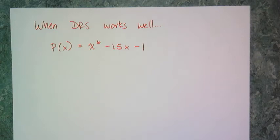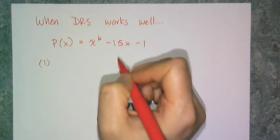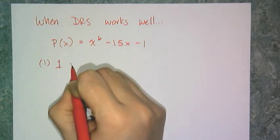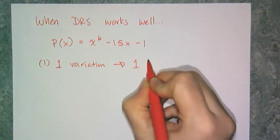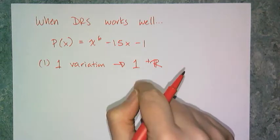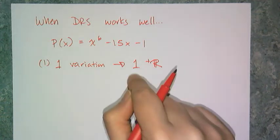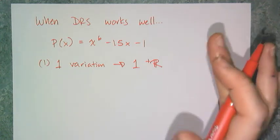Let's look at an example of when Descartes' rule of signs works really well. The example I'm going to use is x to the sixth minus 15x minus 1. Part 1 of Descartes' rule of signs says count how many variations of sign you have in the original polynomial, and I have 1. So I have 1 variation, which means I have exactly 1 positive real root — because I can't have negative 1 positive real roots.